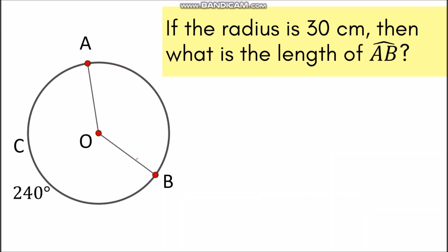For the next example, let's have again circle O. This time the radius is 30 cm and we have the measurement of arc ACB, which is 240 degrees.